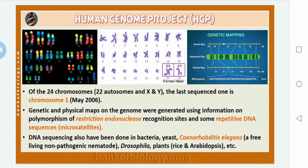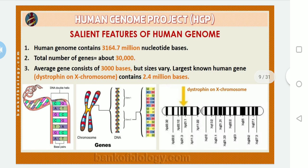DNA sequencing has also been done in model organisms such as bacteria, yeast, C. elegans, Drosophila, and plants like rice and Arabidopsis. This covers the DNA sequencing procedure in HGP. After this, we have to discuss the salient features of the Human Genome Project.